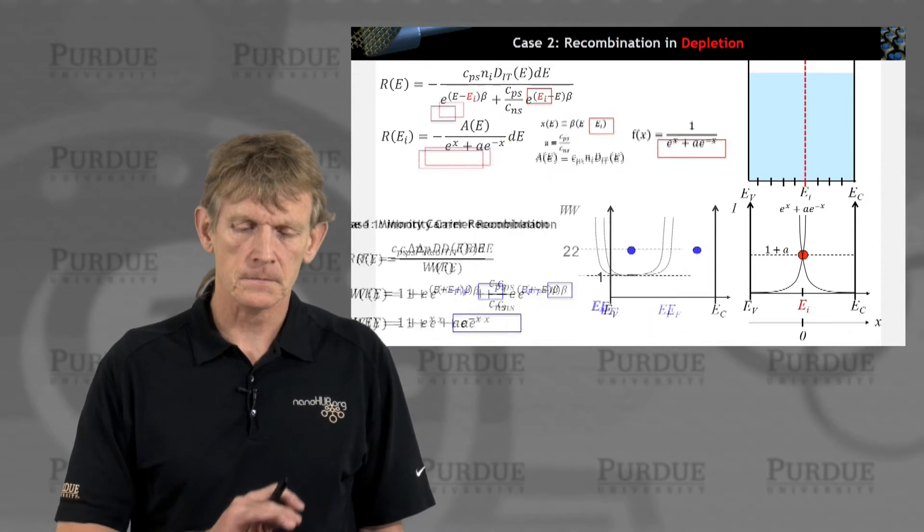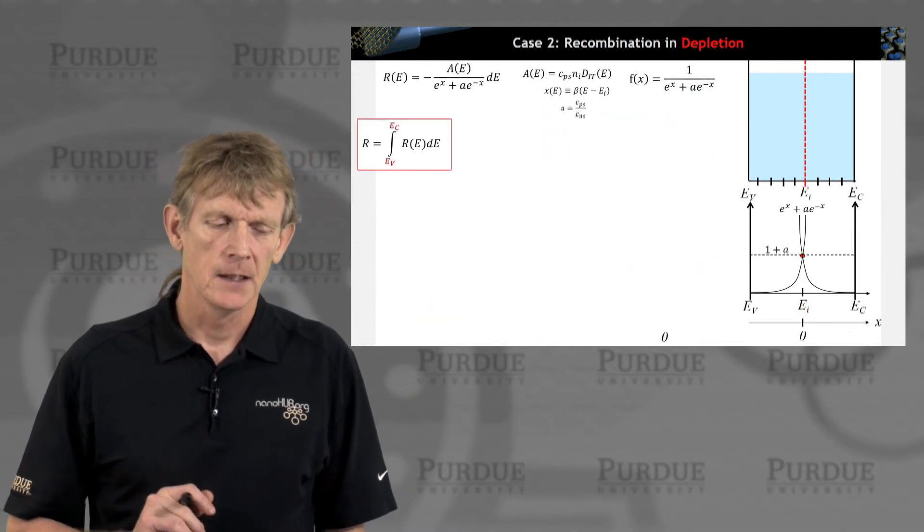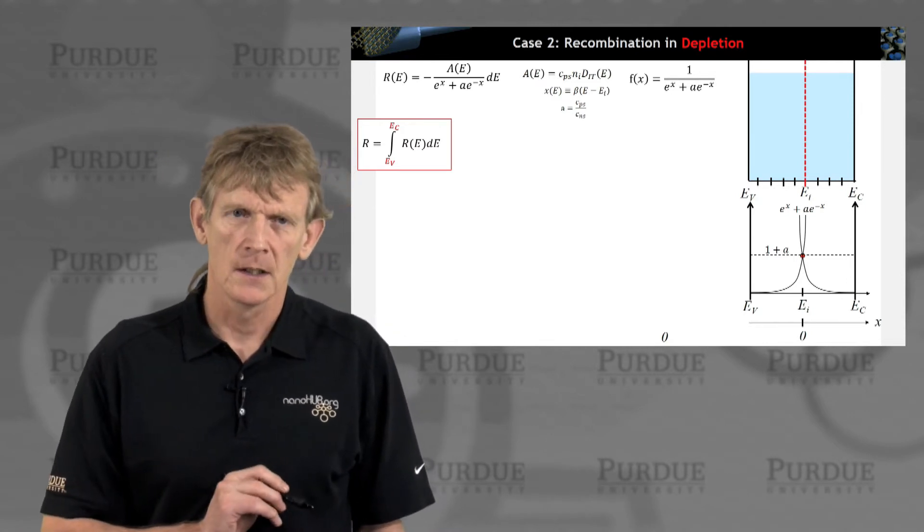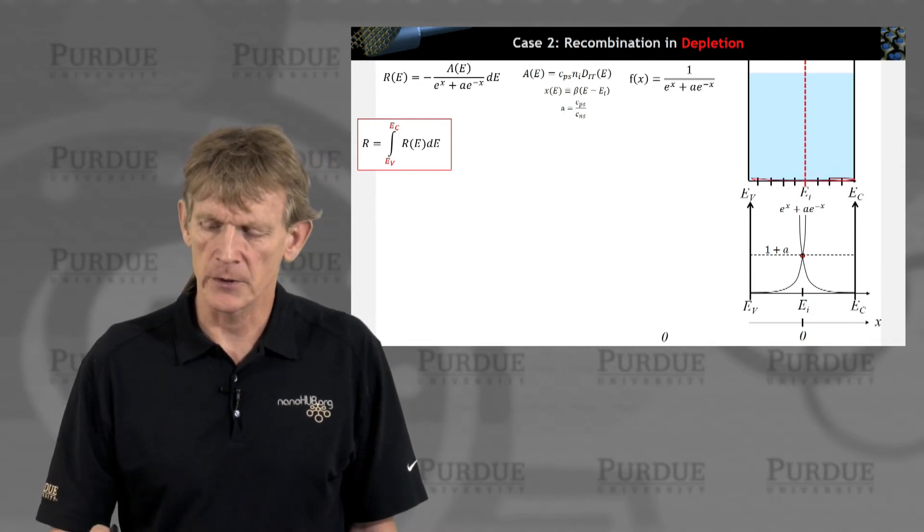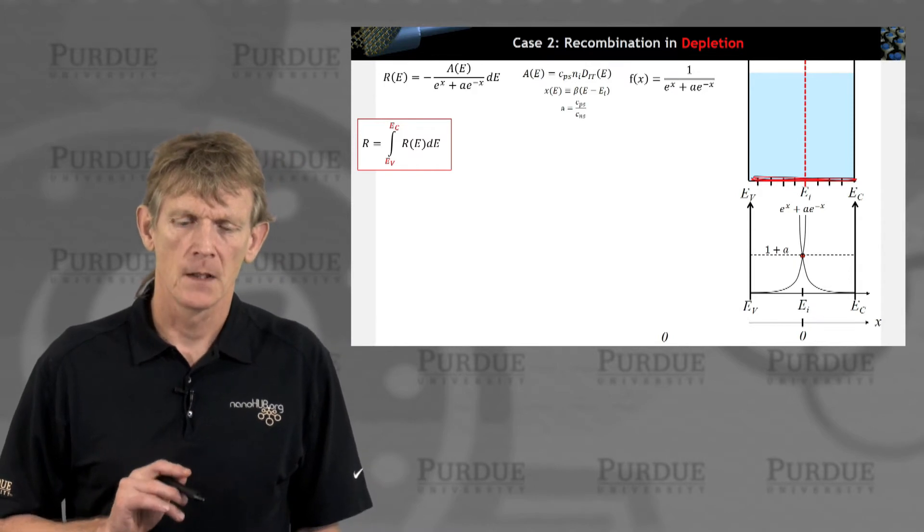Let's keep this in our pocket, and remember that we need to integrate to get the total recombination rate. We need to integrate this over this energy range here where we have all these traps available.